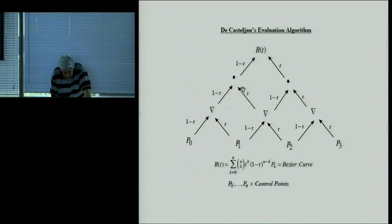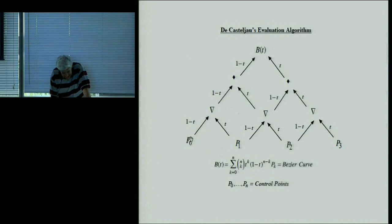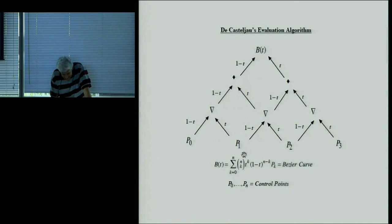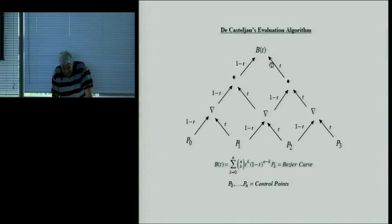Here's another way of evaluating a point on a Bézier curve — the de Casteljau algorithm. Take your control points, then do linear interpolation: multiply one point by (1−t), the next by t, put the result in a new level. Do it again. And then one more time. What comes out the top is exactly the same as the Bernstein formula. This works for any degree.